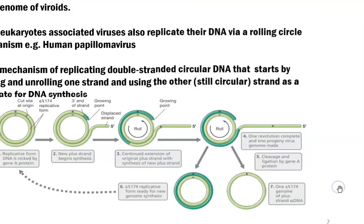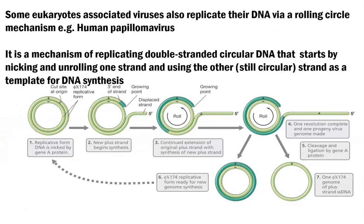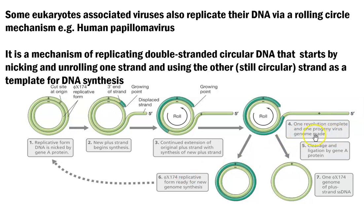The steps involved in rolling circle replication are shown clearly in this diagram. The replicative form of DNA is nicked or cut with the help of an enzyme protein or gene A protein, and then a new plus strand begins to synthesize — the growing point of the strand is shown in green. This strand further extends, that is, continued extension of the original plus strand is subjected for synthesis of a new plus strand. One revolution of replication is completed and only one progeny virus genome has been made.